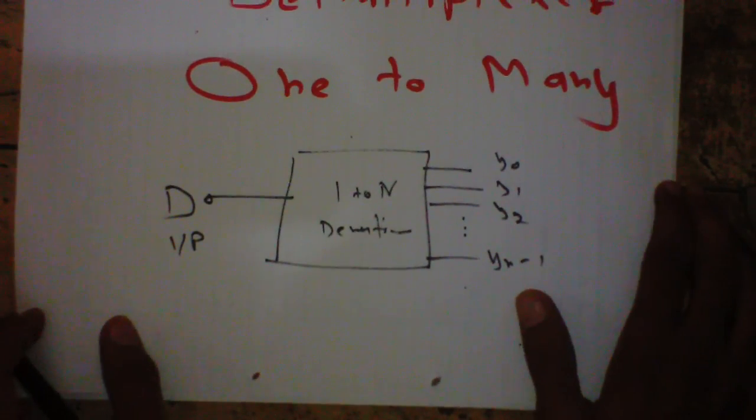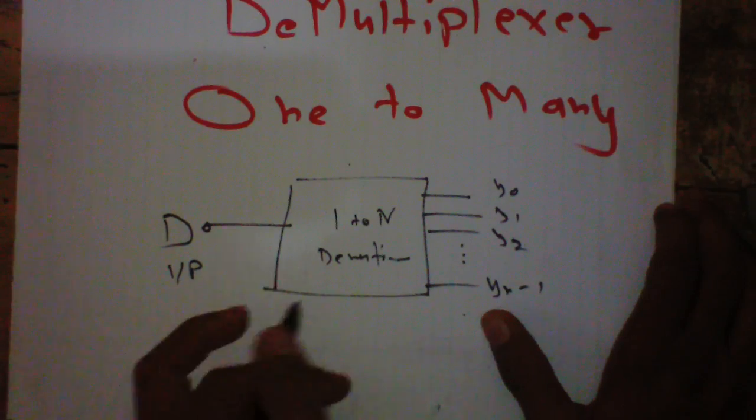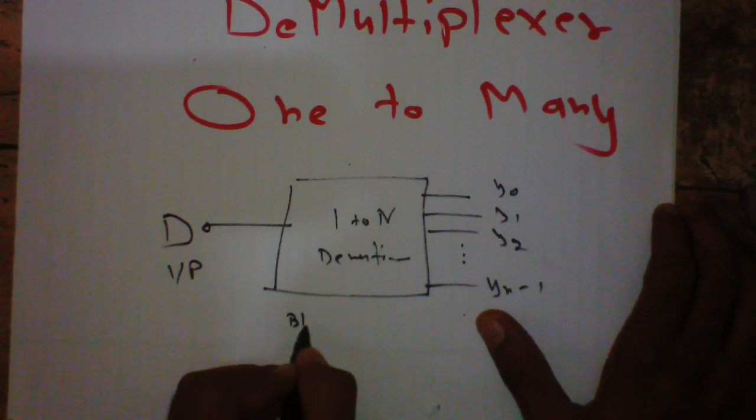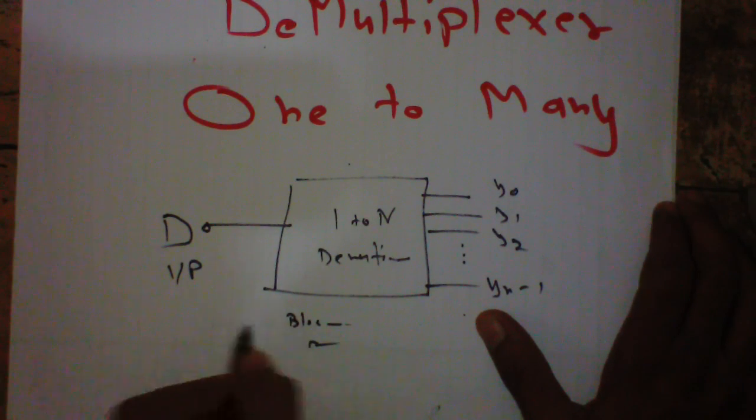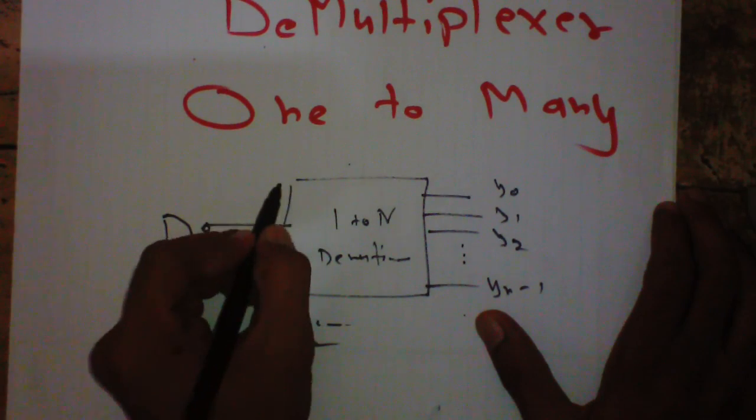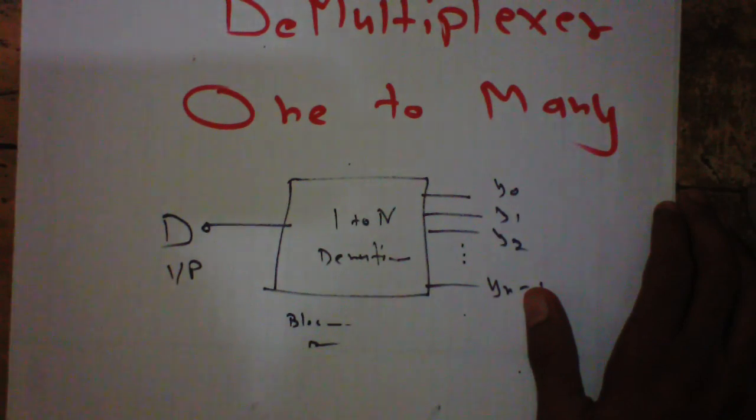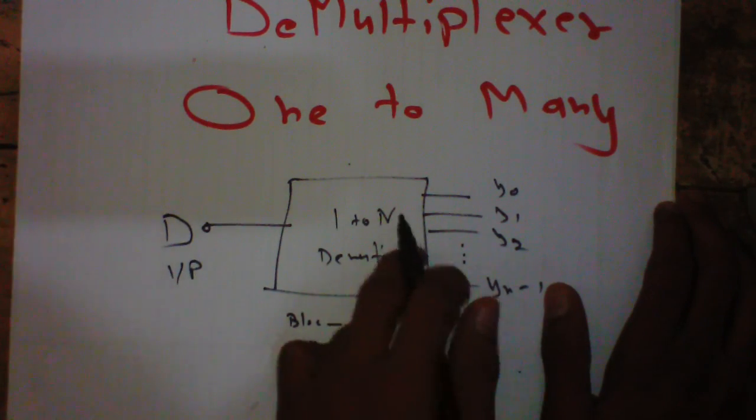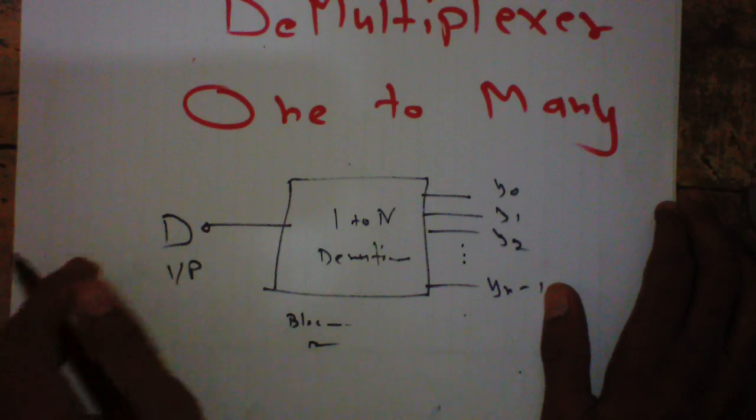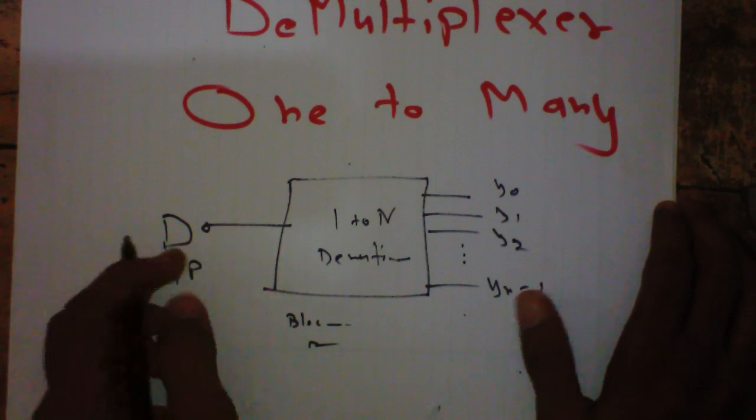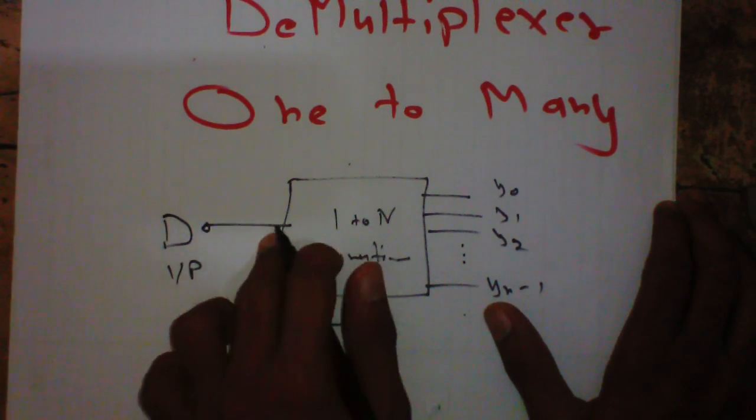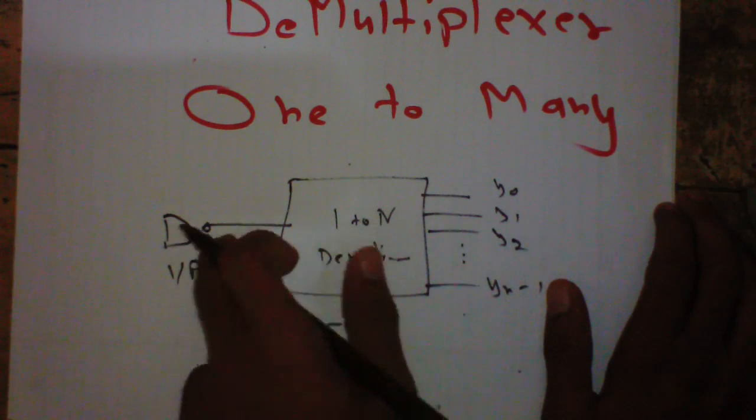So what is the working of the demultiplexer? It sends the input to the selected output, only one selected output. This means, suppose we have D equals 1, it will send that one to Y0 or Y1 or Y2 or Y3 or Yn.